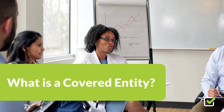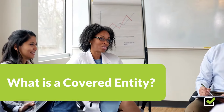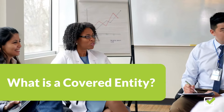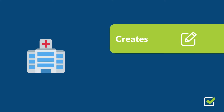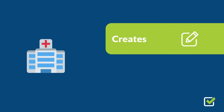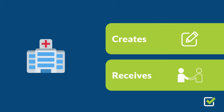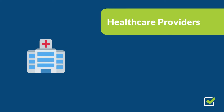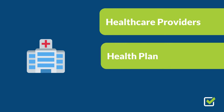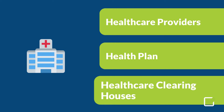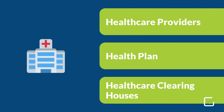What is a covered entity? HIPAA regulates any healthcare organization that creates and receives PHI. These organizations are known as covered entities and must follow all of HIPAA's strict rules. Examples of covered entities include healthcare providers, health plans, and healthcare clearinghouses.